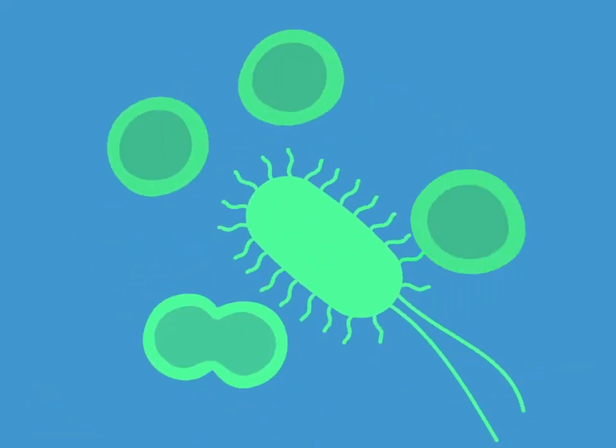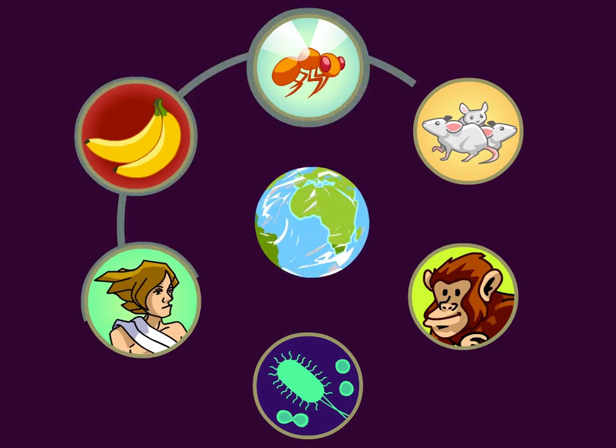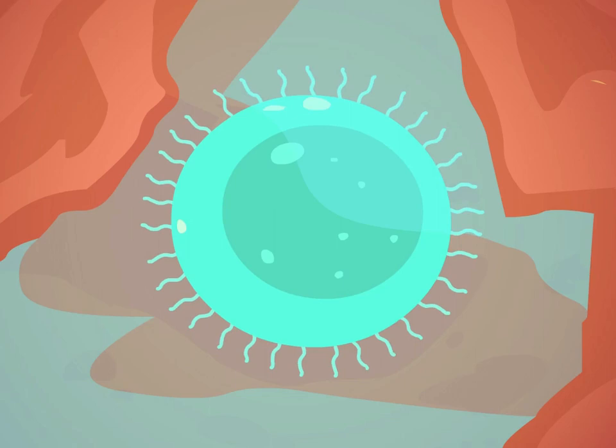We even have genes in common with bacteria and other single-celled life. This supports what Charles Darwin proposed in his theory of evolution more than 150 years ago. All life on Earth is connected, and likely traces back to a single ancestor.